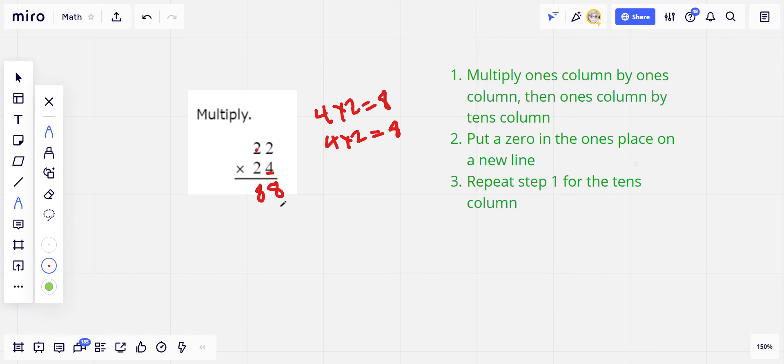Now we're going to go down a row here and put a zero. Why are we doing that? Well, we just did four times 22. Now we're going to do this two, which is really 20. I mean, this is 24 down here, so we did the four, now we're doing the 20.